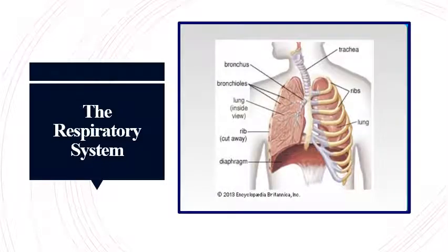The muscles of the chest expand and consequently the lungs expand and draw the air in. Thus we breathe in, or inhale, the air which passes through the trachea into the lungs. And when the muscles of the chest contract, the lungs are compressed and they throw the air out. Thus we breathe out, or exhale, the air that we have breathed in. This is how the respiratory system works.